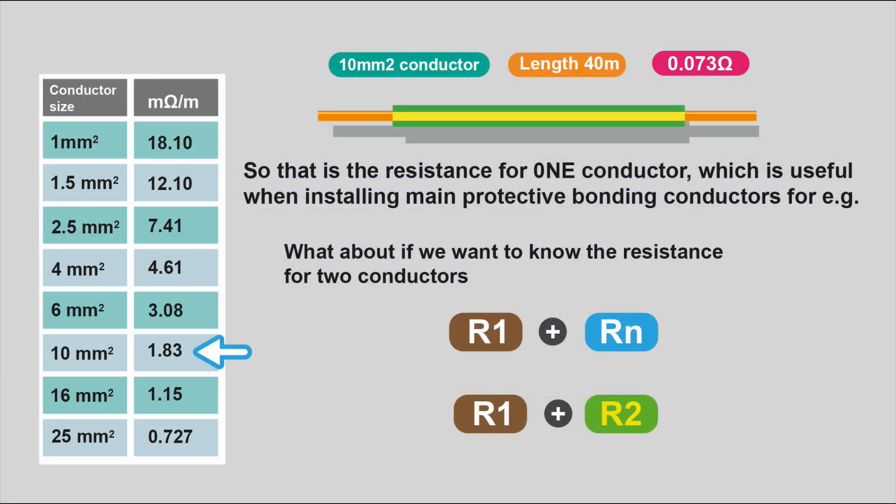So that's how to work out the resistance for one conductor. But what if you want to work out the resistance to two conductors, which you might want to do when you're doing your volt drop calculations or you're doing your R1 plus R2s? Let's have a look at that.